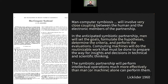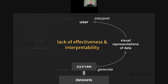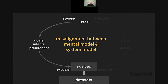Together, if this symbiotic relationship works well, the human and machine can produce more effective results than either alone. However, in the real world, in order to enable this kind of symbiotic relationship, we face two kinds of challenges. On one hand, visual representations produced by systems can be potentially ineffective or very hard to interpret. On the other hand, humans sometimes have difficulty articulating their goals, intents, and preferences due to misalignment between users' mental models and the system's models.